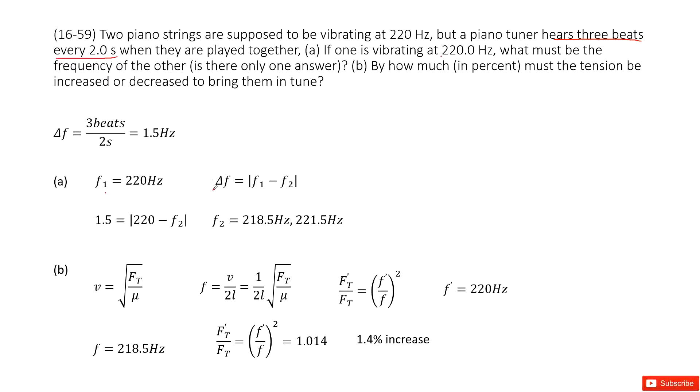And we also know the beat's frequency is absolute value, the difference between f1 and f2. So in this case we just input the 1.5 hertz inside, f1 inside, we get the function look like this one, and we can solve it, get f2. It has two values: 218 and 221.